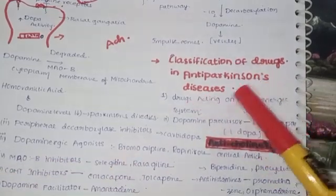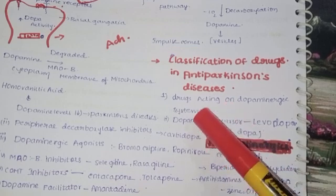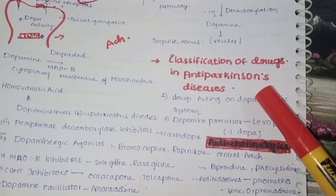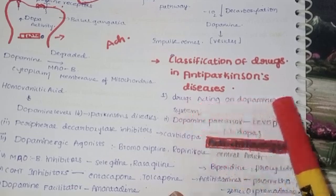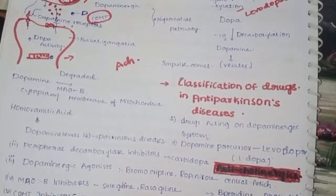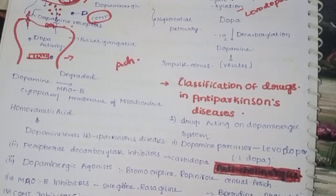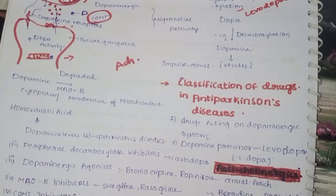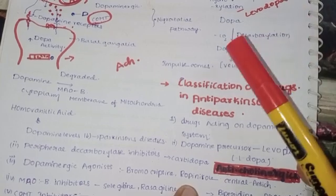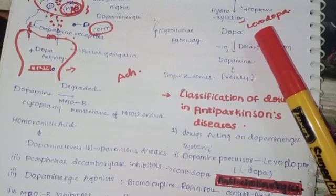Classification of drugs for anti-Parkinson's disease: drugs acting on the dopaminergic system. Dopamine precursor is used because dopamine itself cannot cross the blood-brain barrier — it is hydrophilic. Lipophilic drugs can cross the blood-brain barrier, so levodopa, being lipophilic, is used as the precursor instead of dopamine directly.